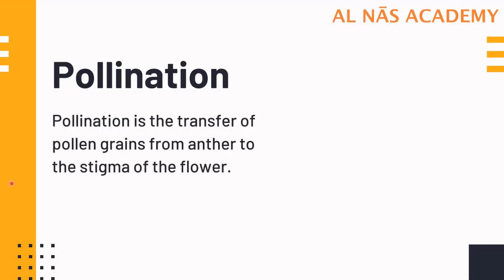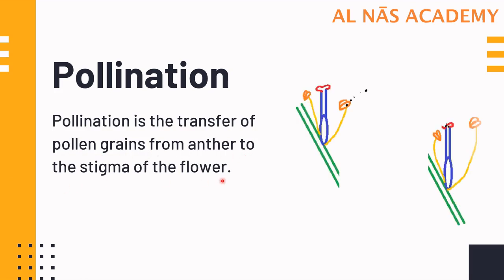Pollination is the transfer of pollens from the anther to the stigma of the flower. So this is the anther, and the pollens which are getting transferred to the stigma of the flower — this process is known as pollination.